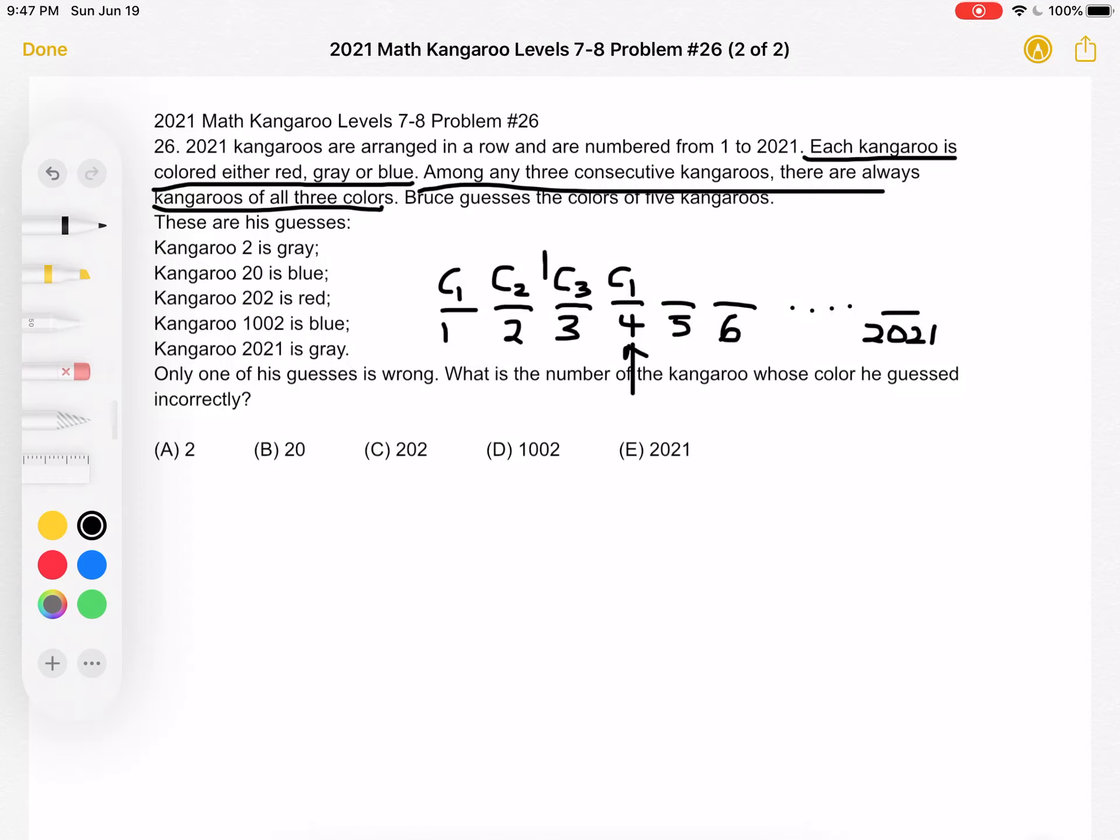What about for 5? So if we look at 3, 4, and 5 we already have color 3 and color 1 represented, so we would need color 2. And if we continue this logic and look at 4, 5, 6, we already have color 1, color 2, we would need to have color 3. And this pattern continues. What we figured out is that we have this repeating sequence of the 3 colors.